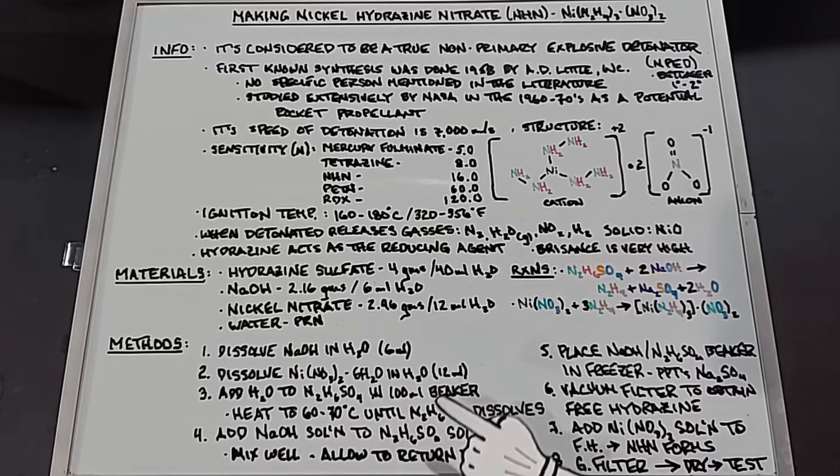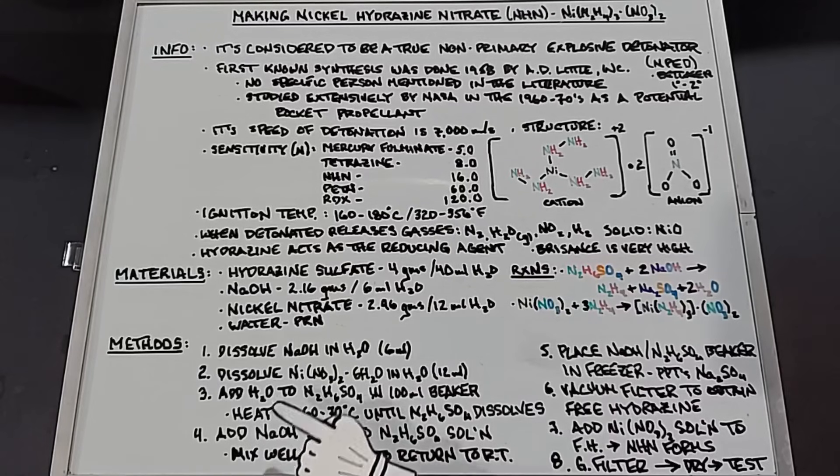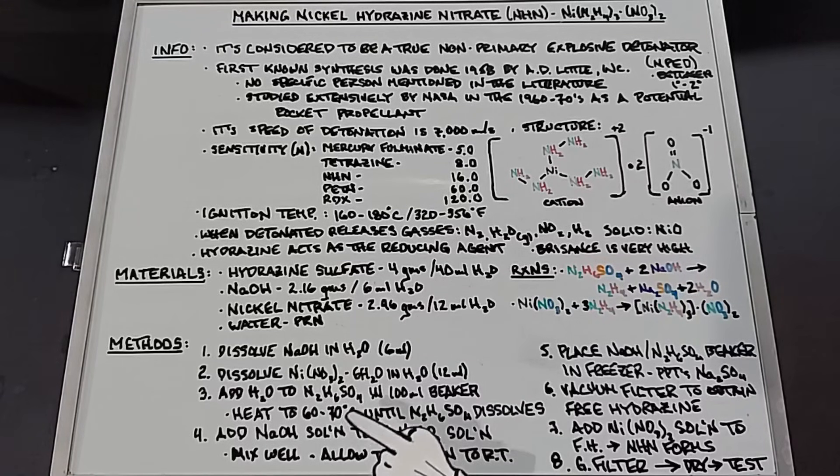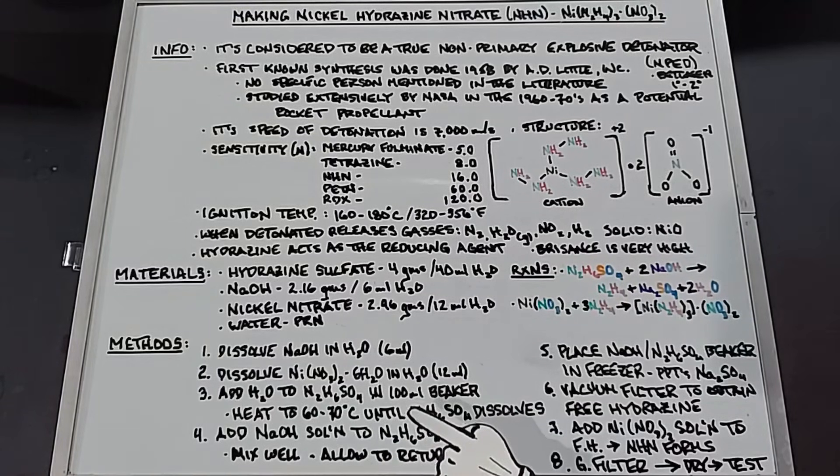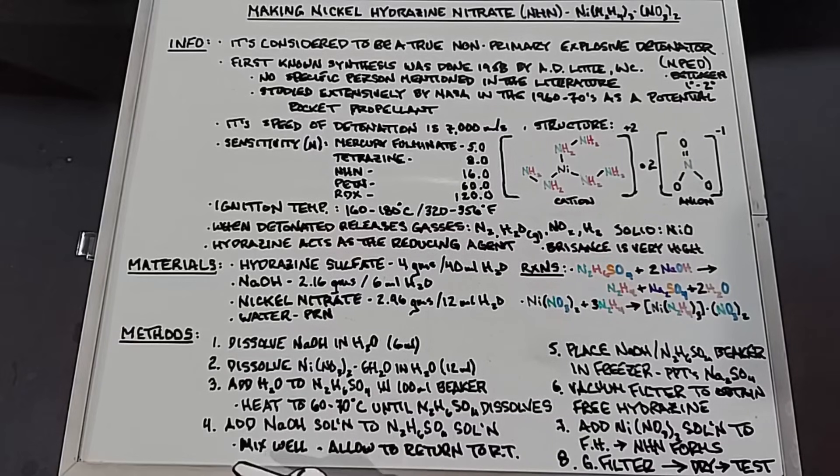so we're going to heat it to 60 to 70 degrees celsius until the hydrazine sulfate dissolves. I found—I've done this several times with different experiments—it does dissolve right around 65 degrees celsius, right between there, without fail. You can't go much above 70 degrees celsius because it'll start to break down the hydrazine sulfate, but if you are careful and keep it right here, you will dissolve that hydrazine sulfate in water. Number 4: we're going to add the sodium hydroxide solution that we already made to the hydrazine sulfate solution. This will create the free hydrazine, and you want to mix it well to make sure you get all the hydrazine you can out of this. Then you're going to allow that beaker to return to room temperature.